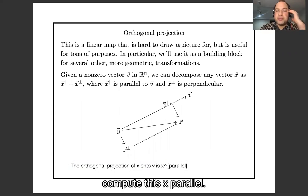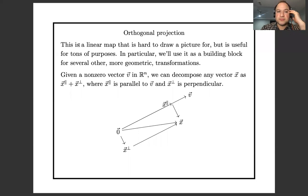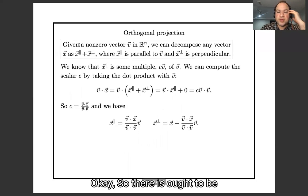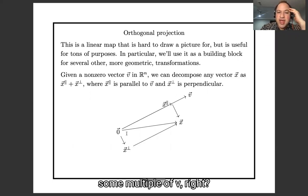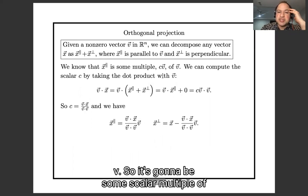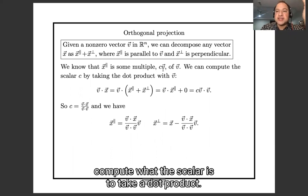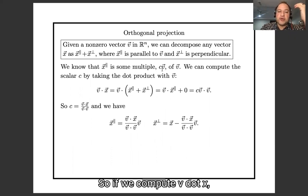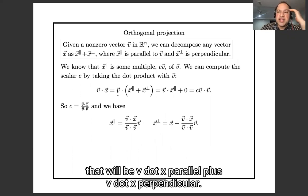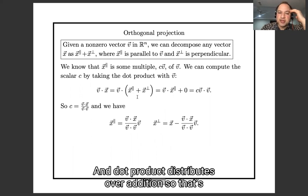What I want to talk about is how do we compute this X-parallel. We know it's going to be some scalar multiple of V — X-parallel goes along the vector V. The trick to compute what scalar it is, is to take a dot product. If we compute V dot X, that equals V dot X-parallel plus V dot X-perpendicular, and the dot product distributes over addition.